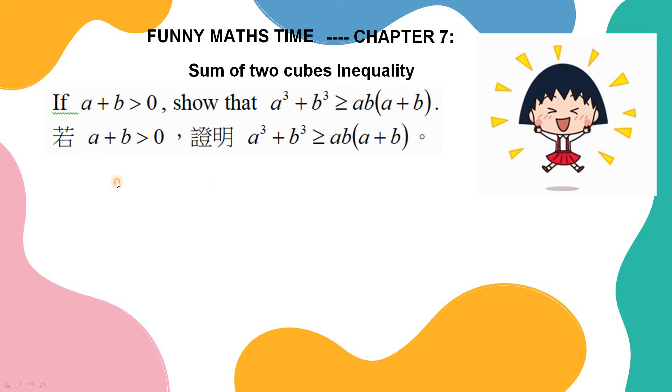Let me start the solution. First, I consider an inequality, which is a minus b all squared is greater or equal to zero. And then expand this square, which becomes a squared minus 2ab plus b squared, greater than or equal to zero.